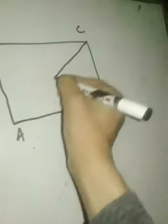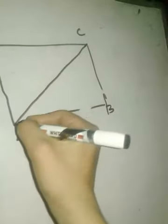The question reads: ABCD is a rectangle in which diagonal AC bisects angle A as well as angle C. Show that ABCD is a square. Also, diagonal BD bisects angle B as well as angle D. This is a rectangle and AC bisects angle A as well as angle C.